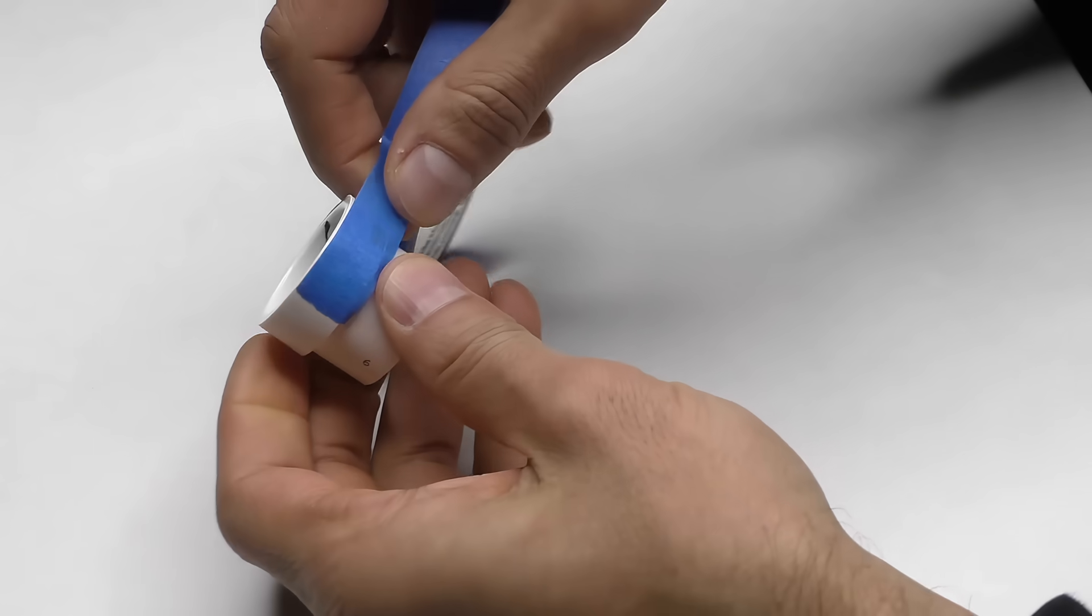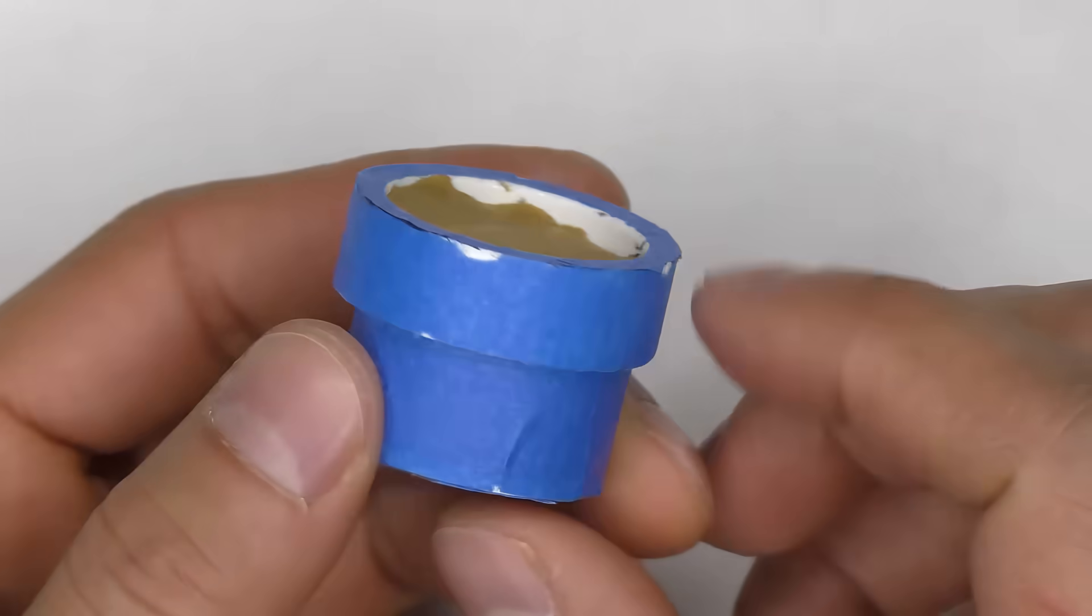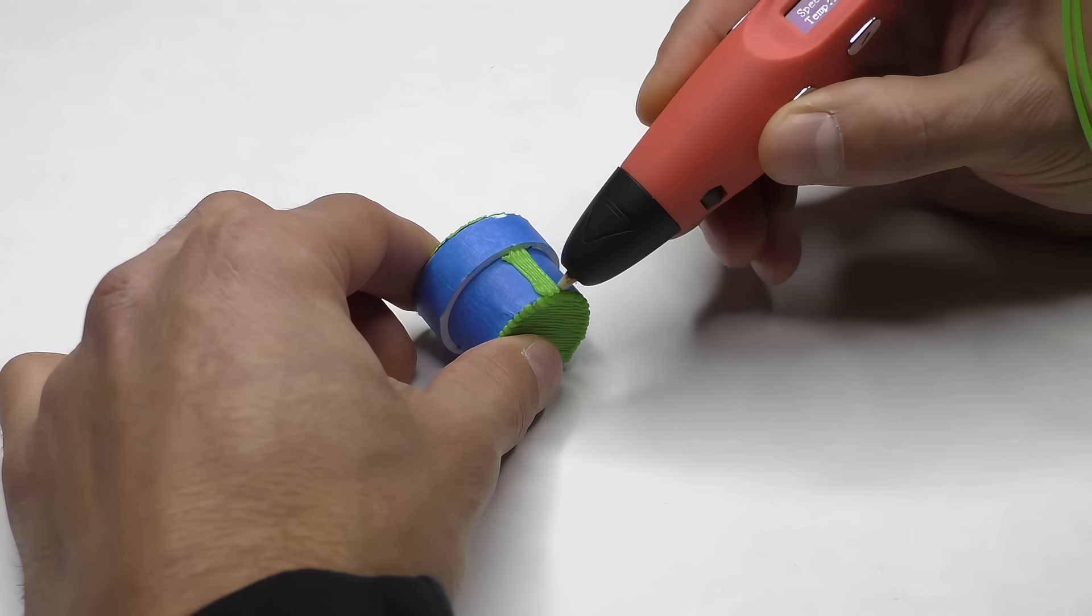Finally, get creative with the different shapes you can use. You can use pretty much anything that painter's tape will stick to. Here I use some PVC pipe to make a nice looking cylindrical object.